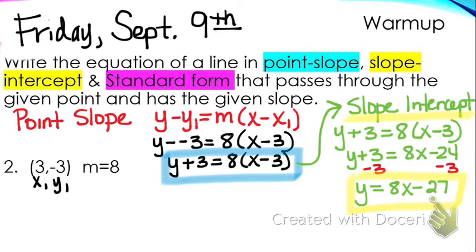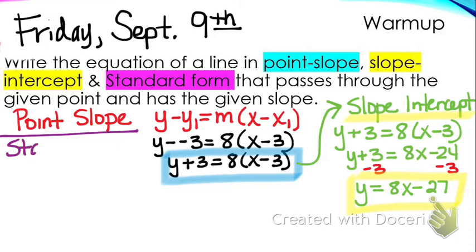Our last format is standard form. Standard form has three rules. First rule: no fractions or decimals. Second rule: A has to be positive. And the third rule is that A and B can't both be zero, but we don't really focus on that rule that much.